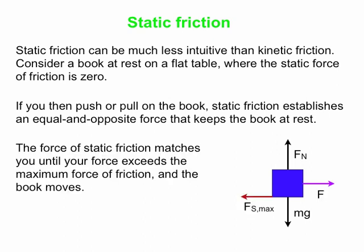If we apply a bigger force and keep increasing it, the static friction keeps increasing to match the force we apply. But you can only do this up to a point. We can increase our force, but the table has a maximum possible force of static friction that it can exert. If our force overcomes this maximum possible force of static friction, then the book will start to slide, and then we're over to kinetic friction.